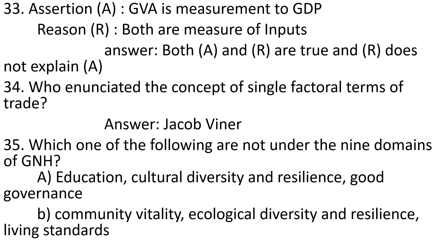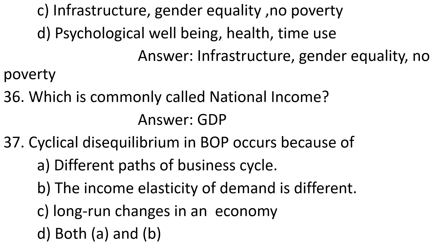Question 34: Who enunciated the concept of single factorial terms of trade? Answer: Jacob Viner. Question 35: Which one of the following are not under the nine domains of GNH? A. Education, cultural diversity and resilience, good governance. B. Community vitality, ecological diversity and resilience, living standards. C. Infrastructure, gender equality, no poverty. D. Psychological well-being, health, time use. Answer: Infrastructure, gender equality, no poverty.